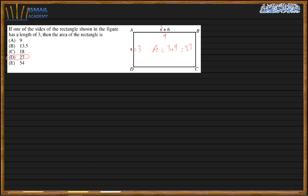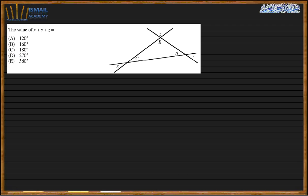Next question: find the value of x + y + z. Using vertical angles, the angles at the intersection correspond so that x, y, and z are the interior angles of a triangle. The sum of the interior angles of a triangle always equals 180°. The answer is C.